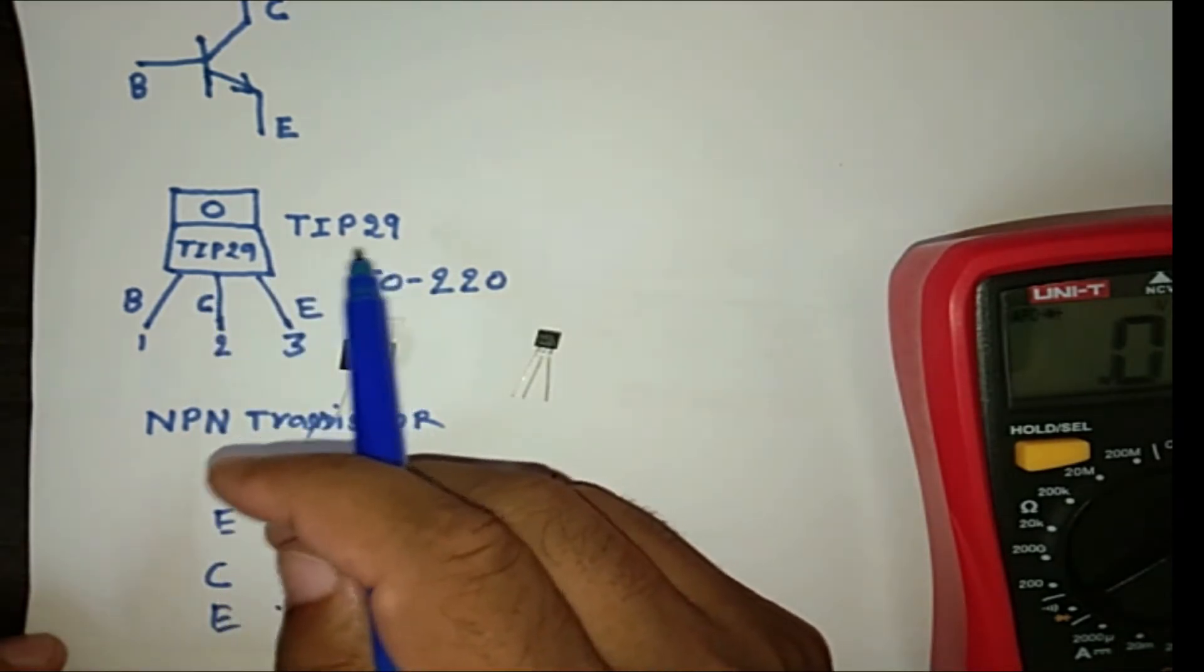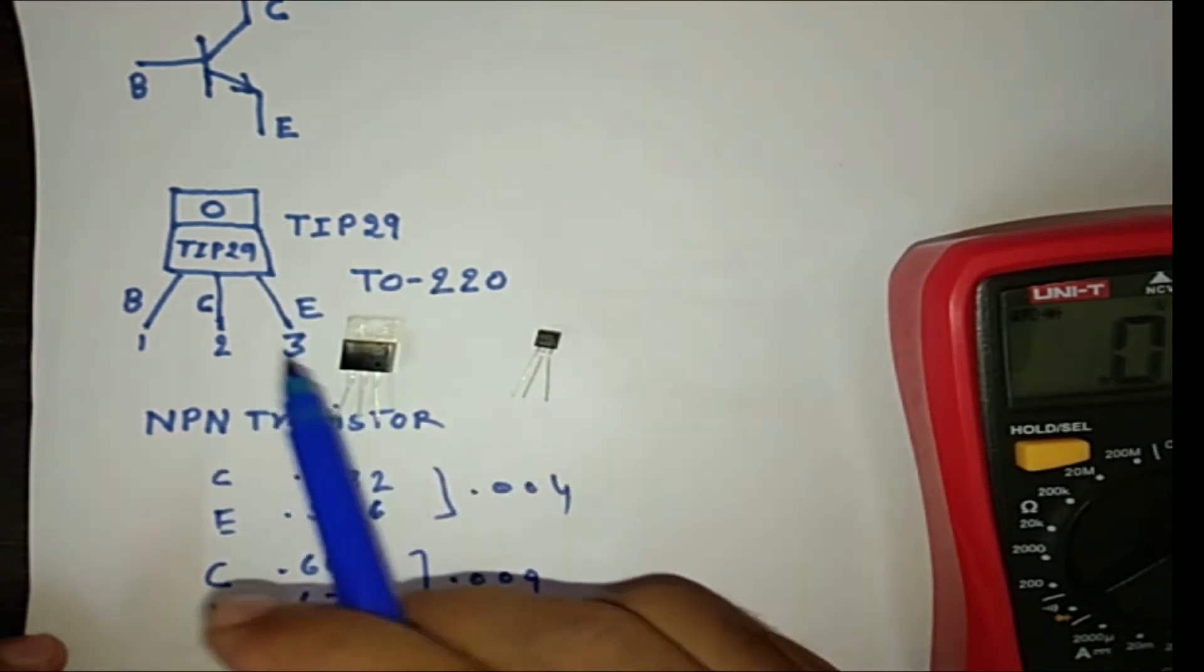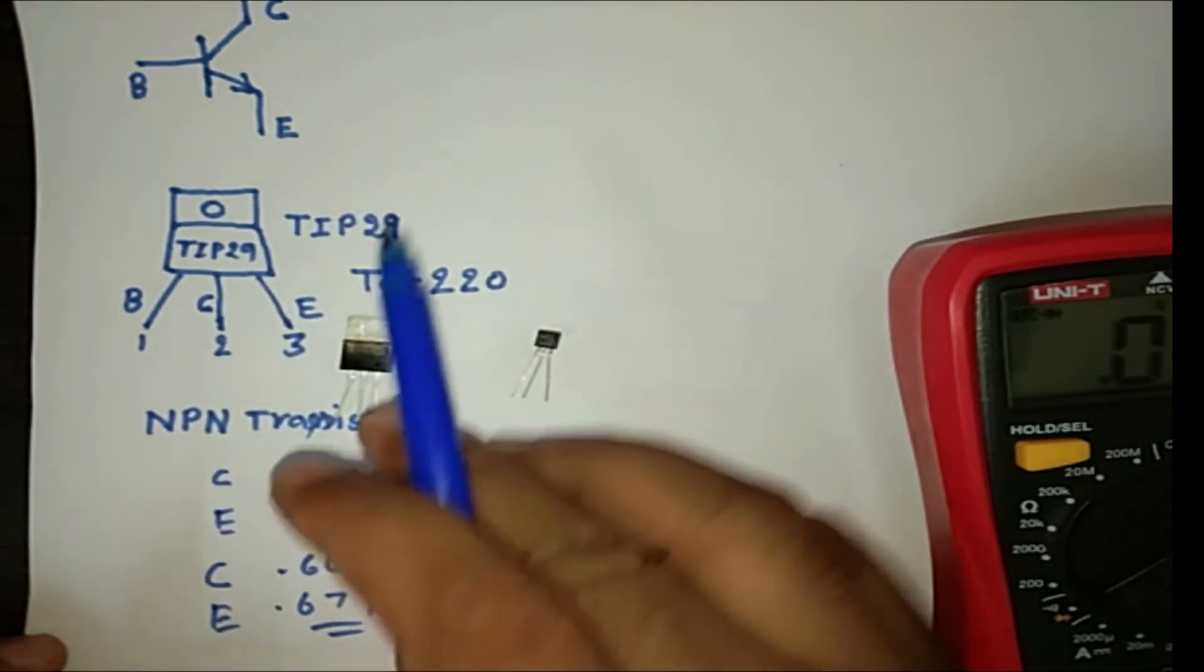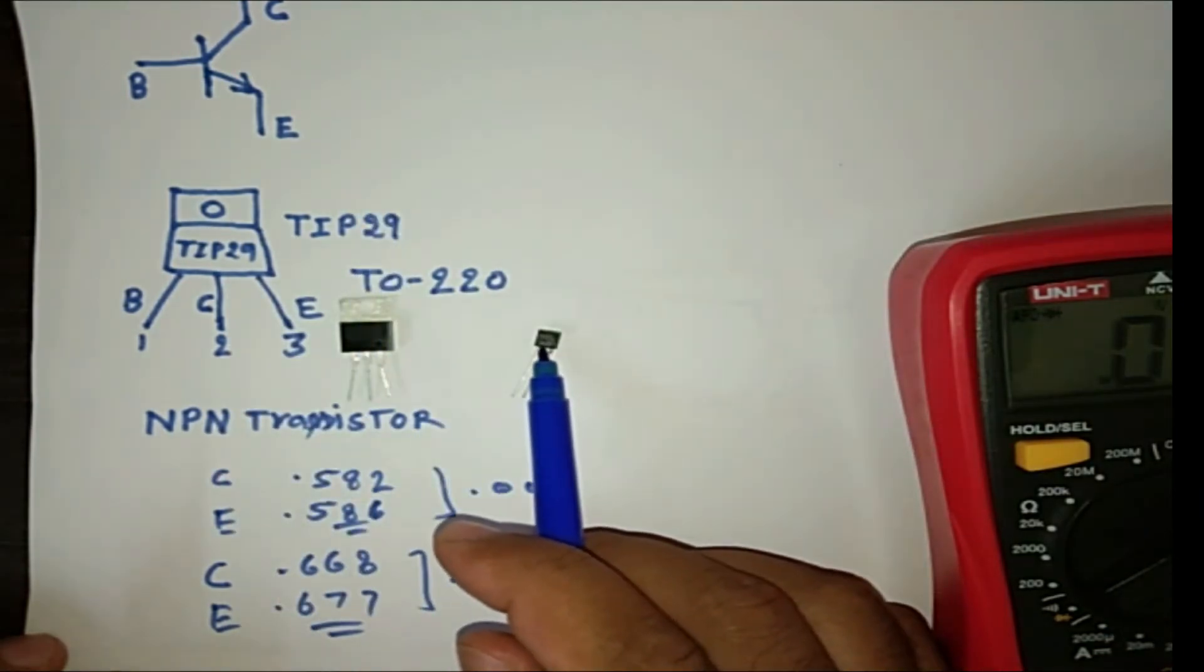TIP29 transistor. So this transistor is NPN transistor. And it is something big than this transistor. This is also NPN transistor.